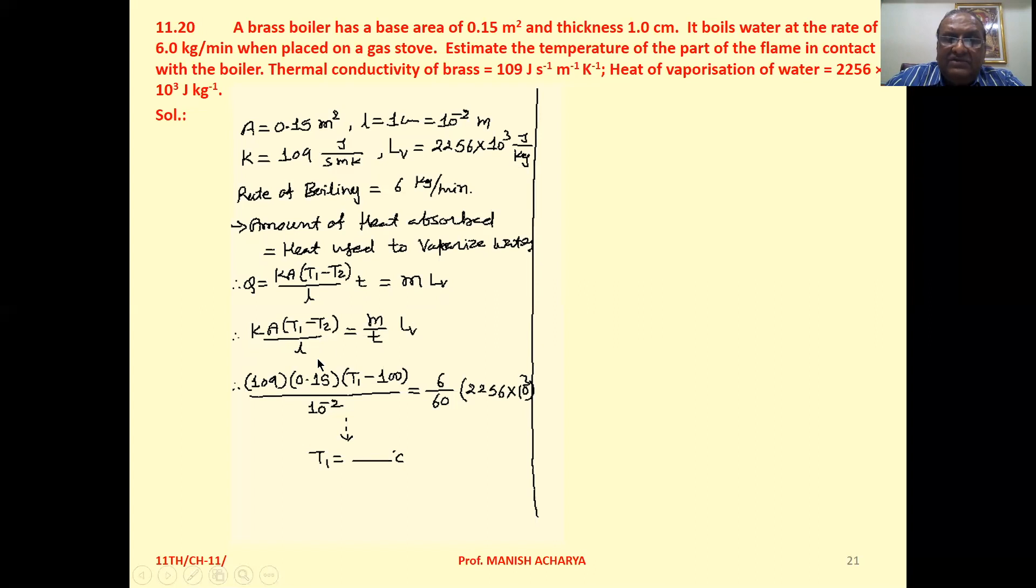Now k equals 109, area equals 0.15, T₁ is the temperature of the boiler or we can say flame that we want to find, T₂ is the temperature of the boiling water, that is 100, upon L, 10⁻².